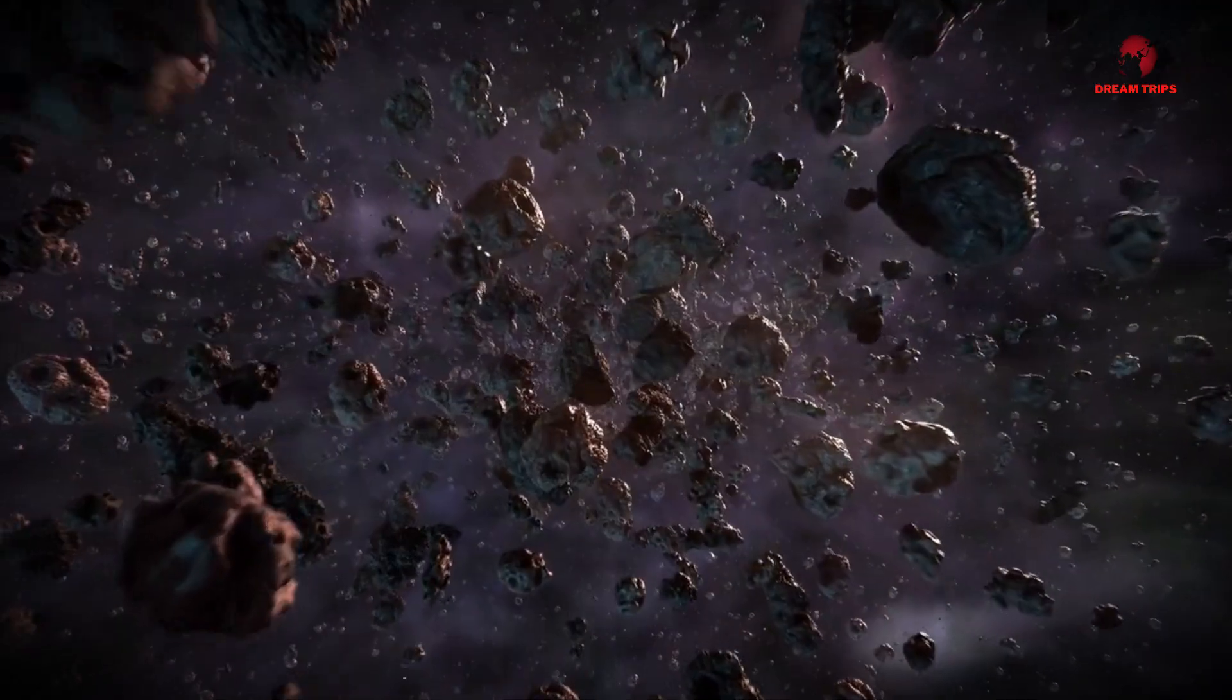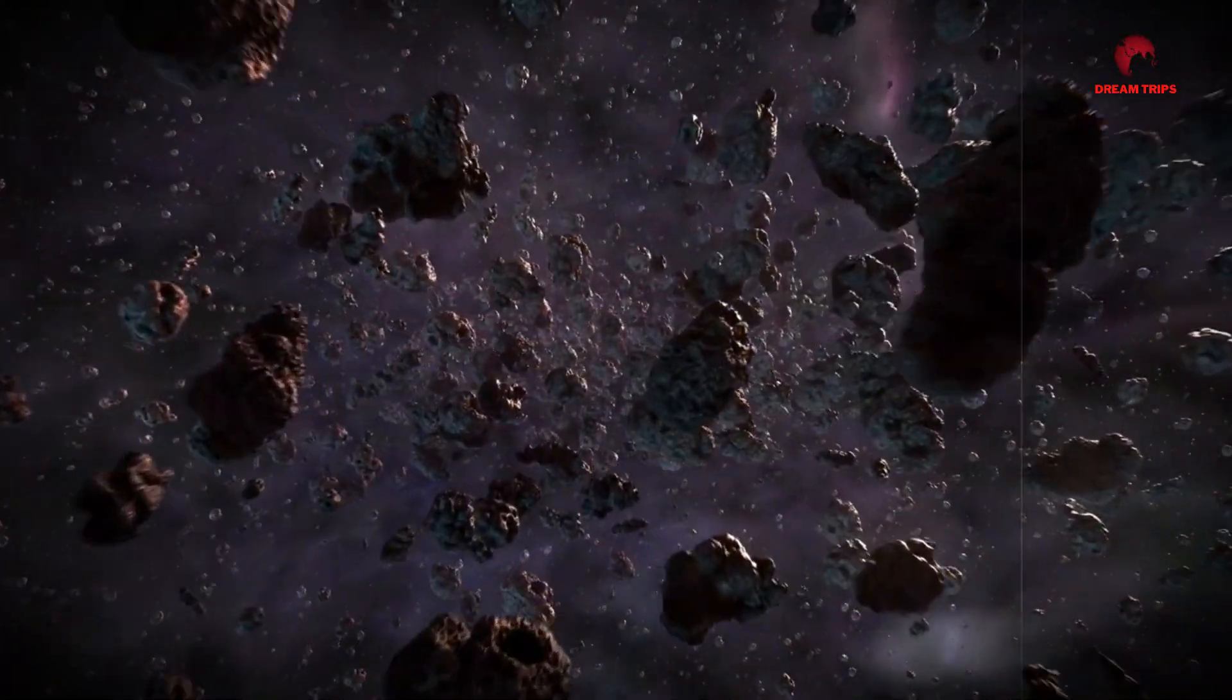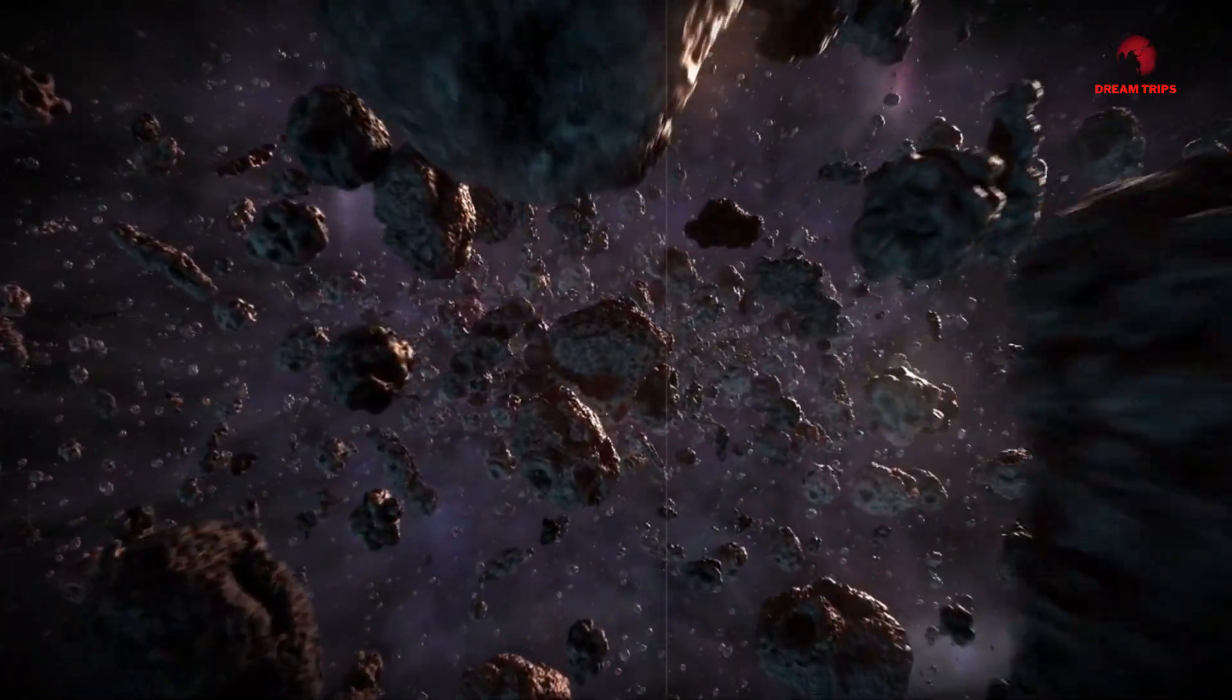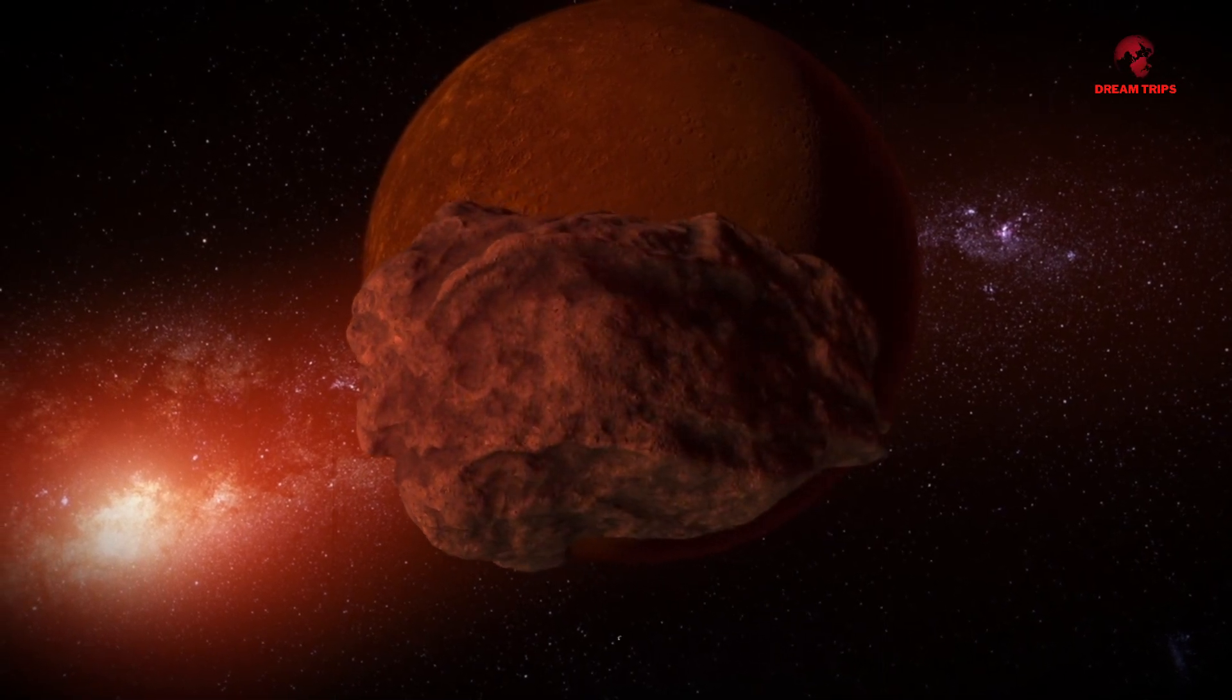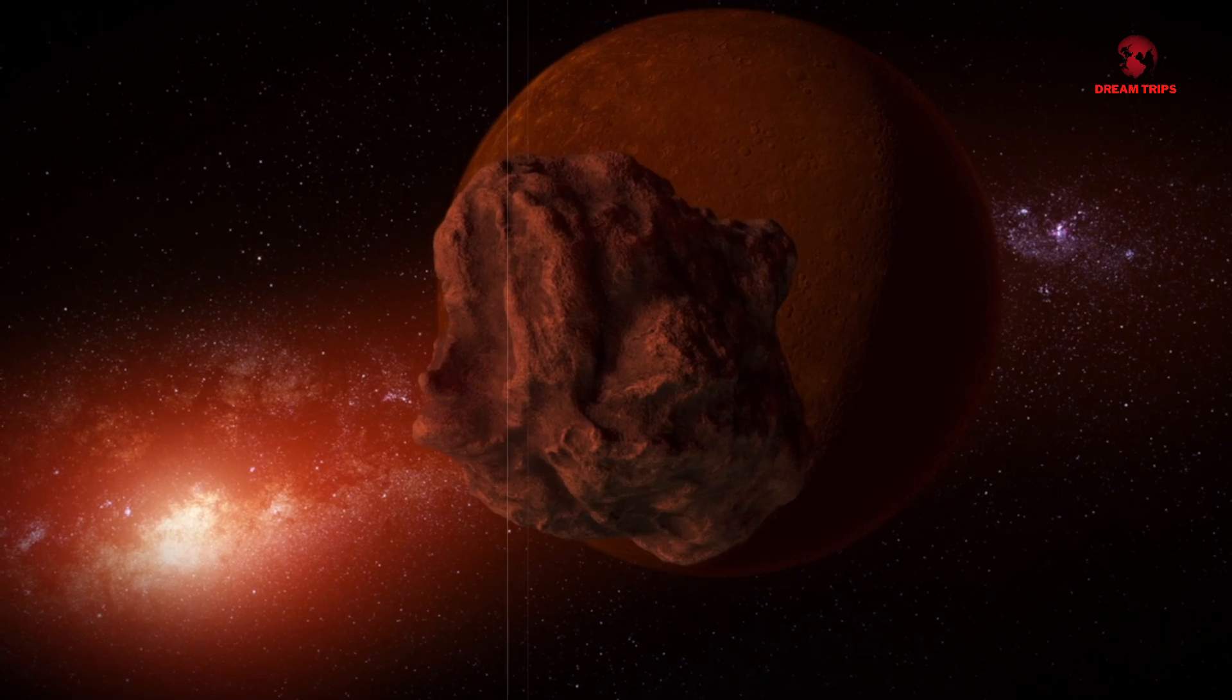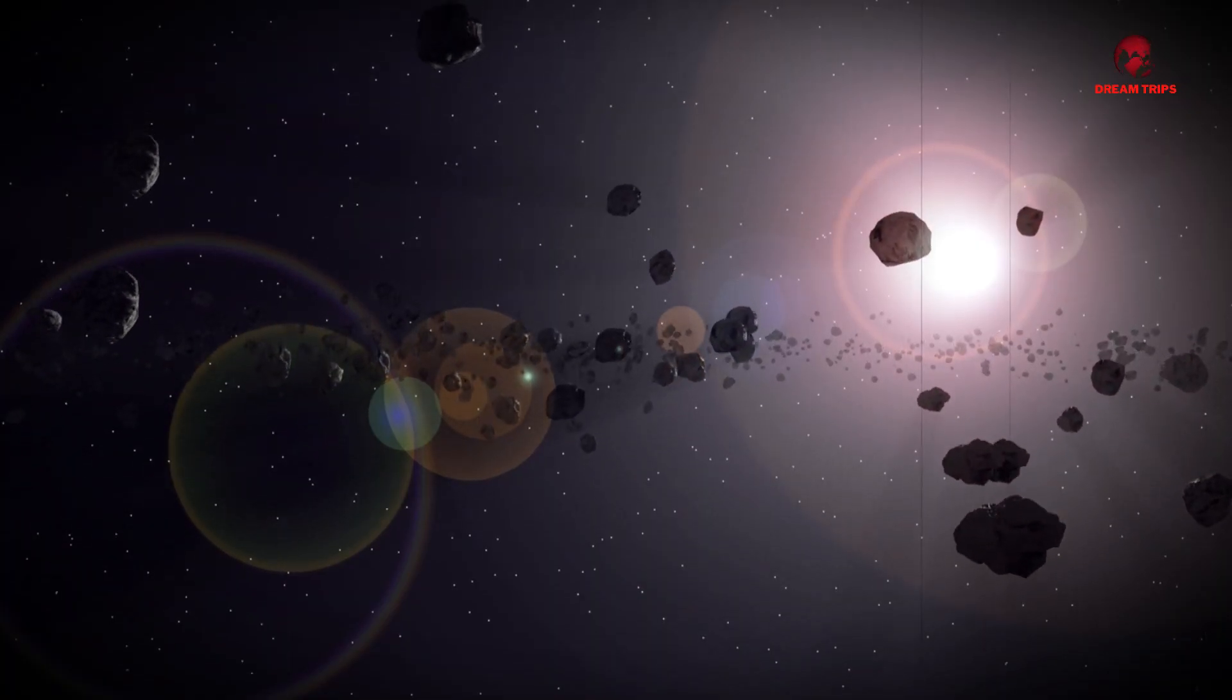This article has explored what the Kuiper Belt is, its historical context and discovery, where it can be found in space, its structure, composition, and how this disk of objects beyond Pluto could ultimately play a key part with regard to our understanding about how planetary systems are formed. It is clear the Kuiper Belt contains a variety of objects, dwarf planets and comets as well. We have reviewed different types of Kuiper Belt formation models. This includes scientific missions and key finds that help us learn more about this distant realm.